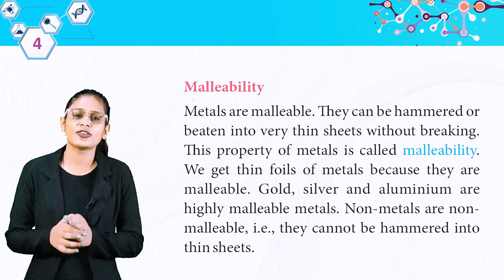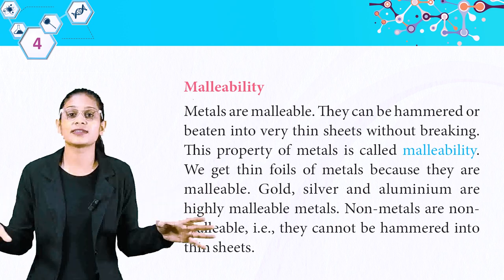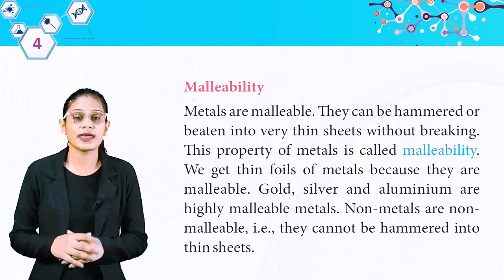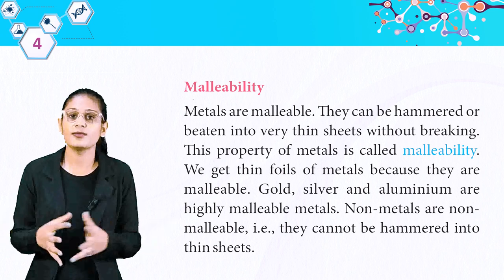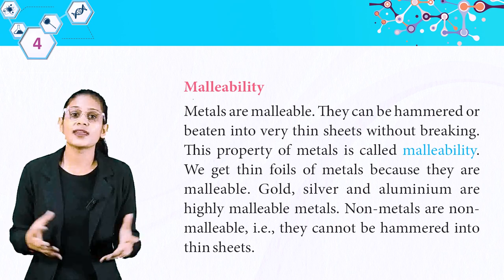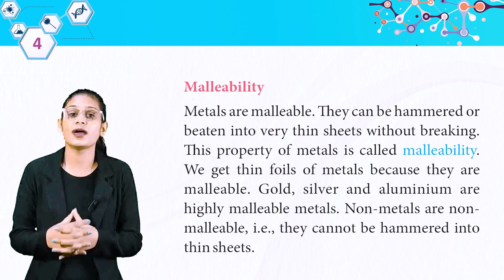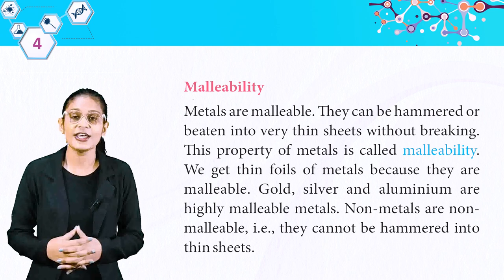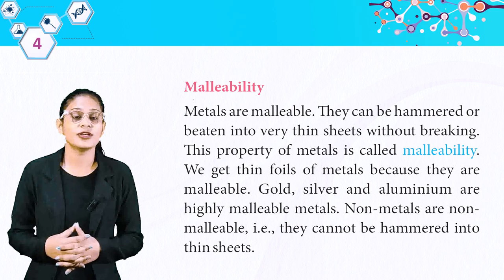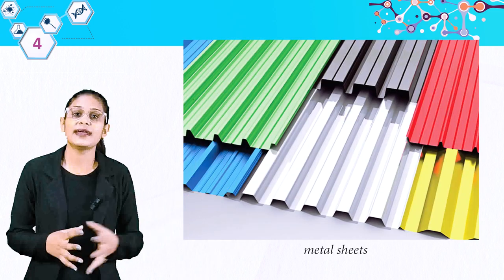We get thin foils of metals because they are malleable. Gold, silver and aluminium are highly malleable metals. Non-metals are non-malleable — that means they cannot be hammered into thin sheets. Look at these pictures of metal sheets.